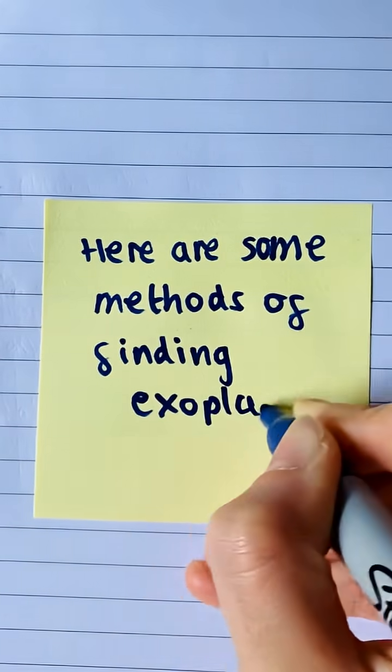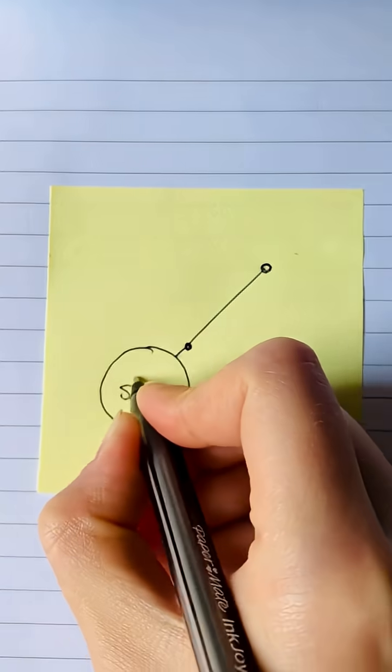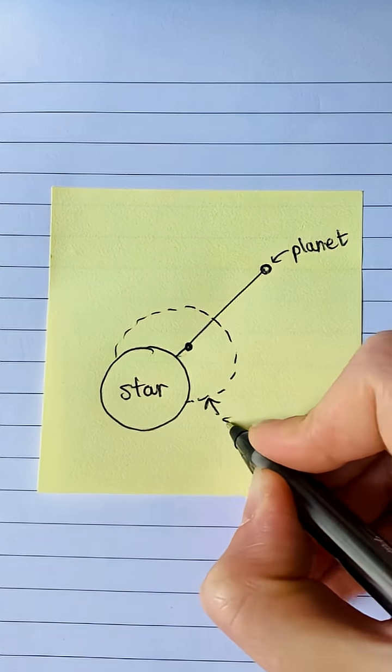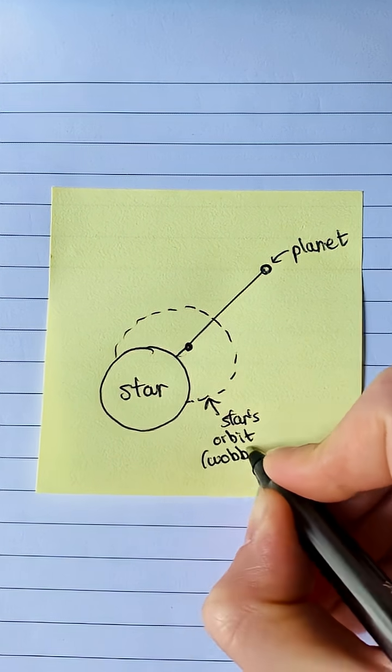So here are some methods of detecting exoplanets. The radial velocity method involves measuring how red or blue shifted a star's light is as an exoplanet orbits it.